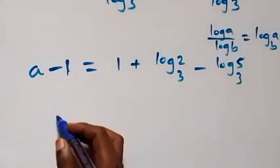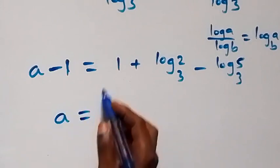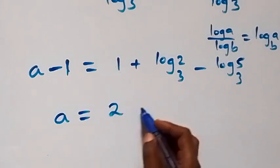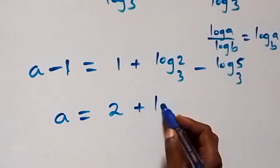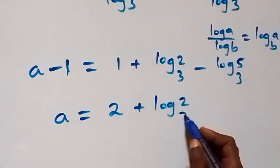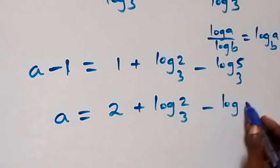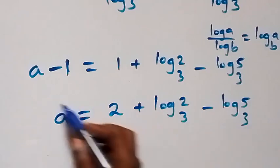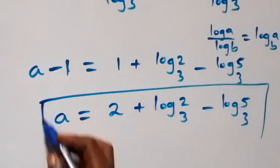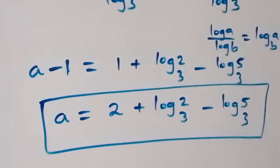Since we are finding a, let's take minus 1 to the other side — it becomes plus 1. So we are left with a equals 1 plus 1, that's 2, plus log base 3 of 2, minus log base 3 of 5. So the solution to this given problem is a equals 2 plus log base 3 of 2 minus log base 3 of 5.